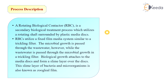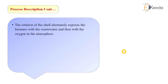In the trickling filter, the wastewater is passed through the microbial growth — that is the key difference between the two. In RBCs, the media or disc is rotating and immersed in the wastewater, so the microbial growth passes through the wastewater. It is important to understand this difference between the two units.